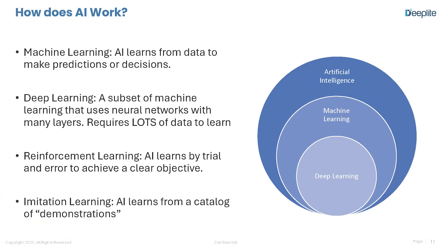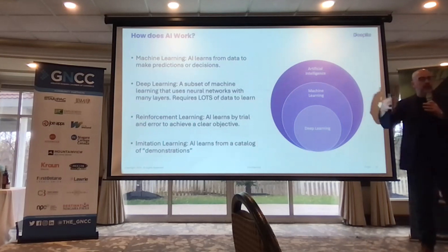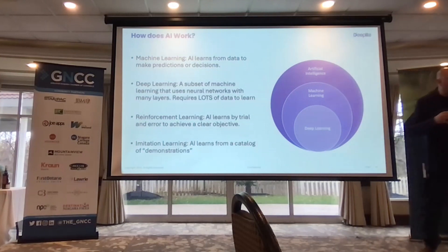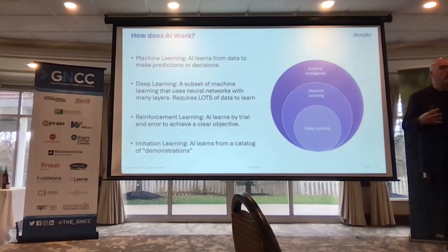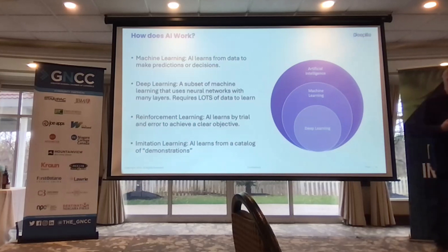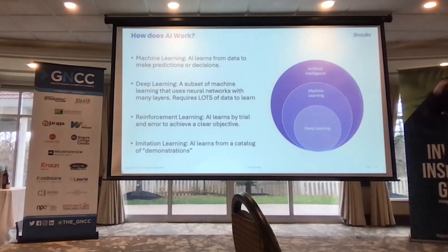So AI is the concept of having a machine act like a human. Machine learning is essentially a subset of AI — algorithms trained with data. It's powerful but somewhat limited because the data has to be manually curated. Deep learning is where things really exploded. It models its algorithms off of what your brain does — the way the neural network of your brain operates. That's essentially what a deep neural network mimics.